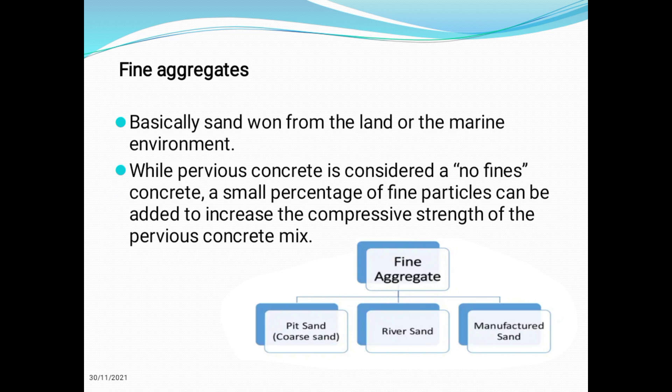Fine aggregates are basically sand worn from land or the marine environment. While pervious concrete is considered a no-fines concrete, a small percentage of fine particles can be added to increase the compressive strength of the pervious concrete mix. Fine aggregates can be classified as follows: pit sand, which is coarse sand; river sand; and manufactured sand.